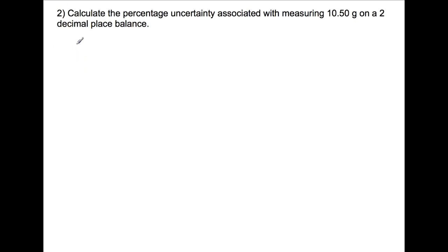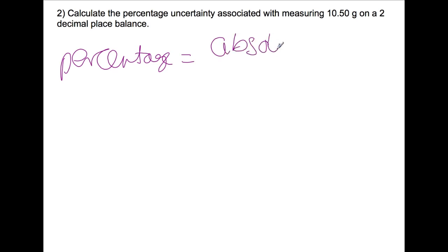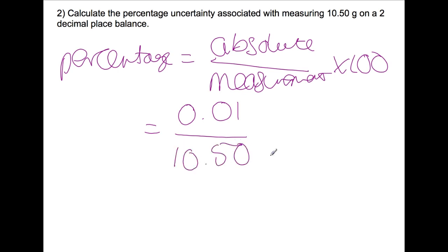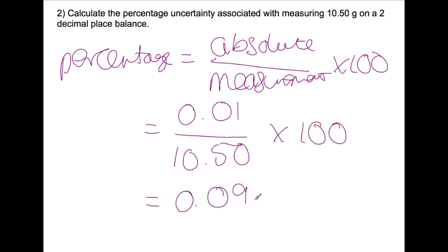In our second example, we're looking at weighing out a solid on a two decimal place balance. The formula is: percentage equals absolute divided by measurement times 100. The absolute error for a two decimal place balance is one in the final digit — so we have 0.01. Divided by the amount weighed out, which is 10.50, times 100, gives us a percentage error in this mass of 0.095%.